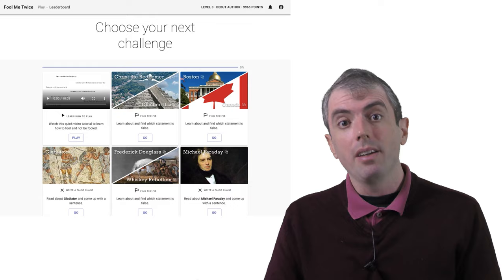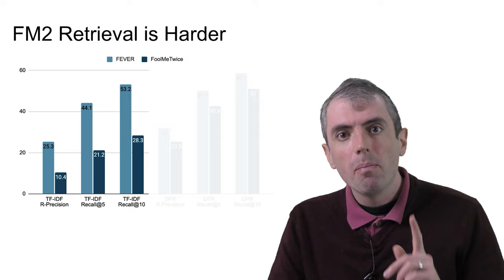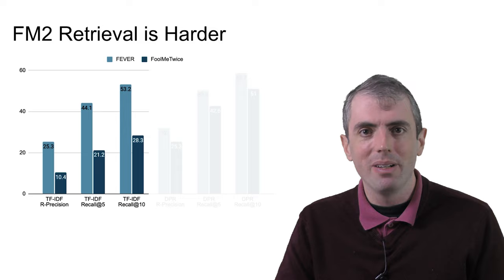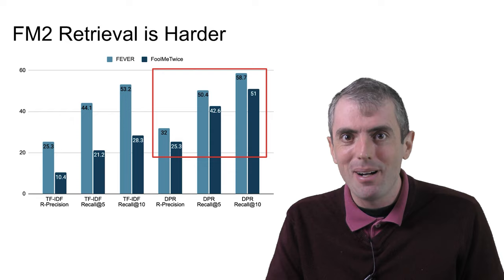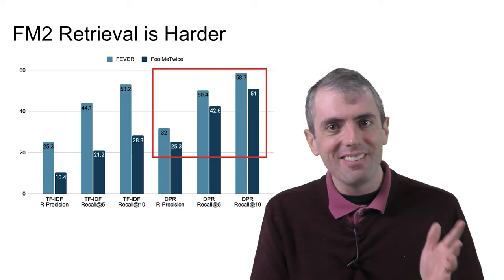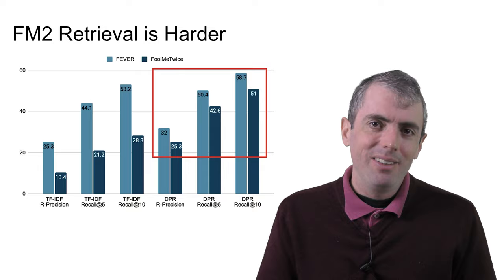Our dataset is harder than FEVER, especially at pulling up the appropriate evidence. But the gap between FEVER and the Fool Me Twice dataset shrinks if you use a DPR retriever, which suggests that we need to swap out the retrieval mechanism. But because I worked on this while I was on sabbatical, and I was too lazy to get dense retrieval to work in pure JavaScript or stand up a server, we just have TFIDF. Hopefully we can improve it soon.